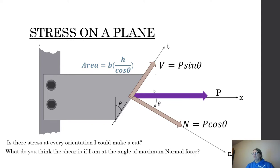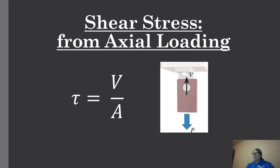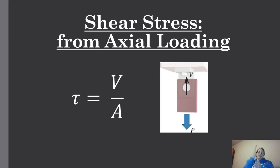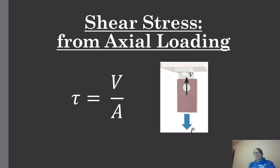To summarize: shear stress is tau (τ) — tau means shear, meaning parallel or tangent to the plane. Normal stress is sigma (σ) — perpendicular to the plane. Stress equals force over area. I'll be posting the next set of examples — please reach out if you have questions.